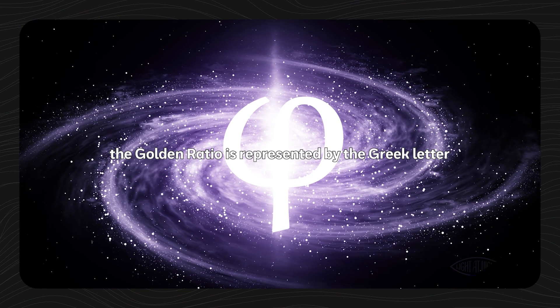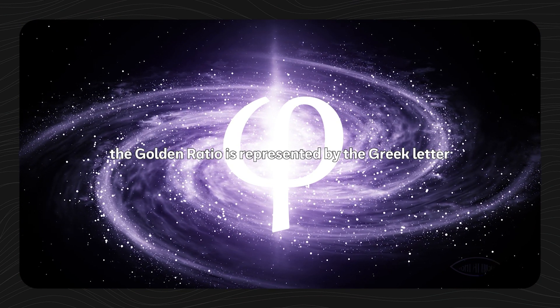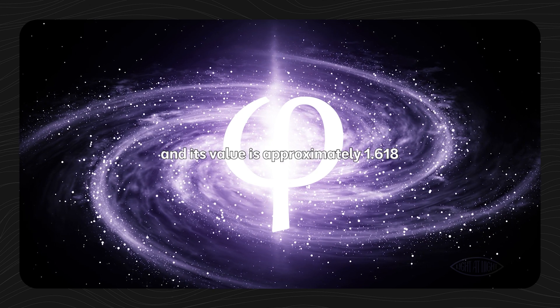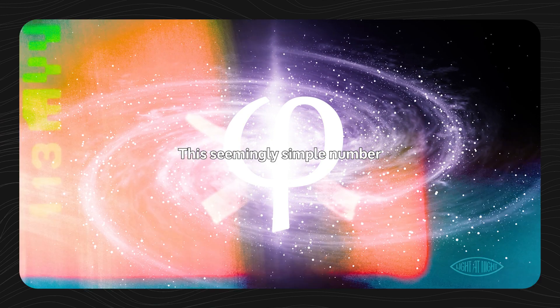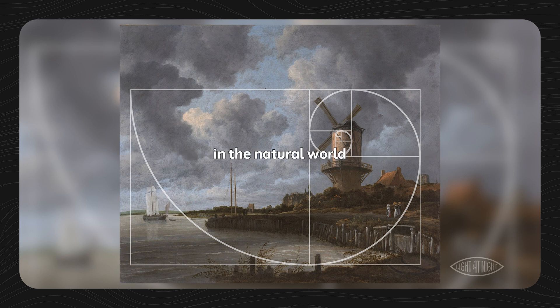Mathematically, the golden ratio is represented by the Greek letter phi, and its value is approximately 1.618. This seemingly simple number defines a proportion that appears again and again in the natural world and human-made creations.